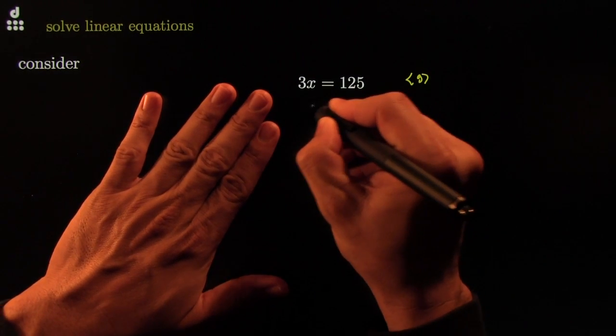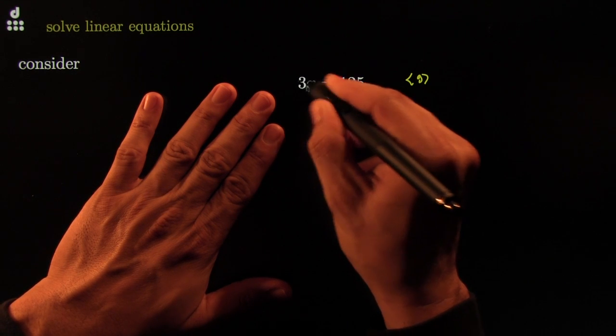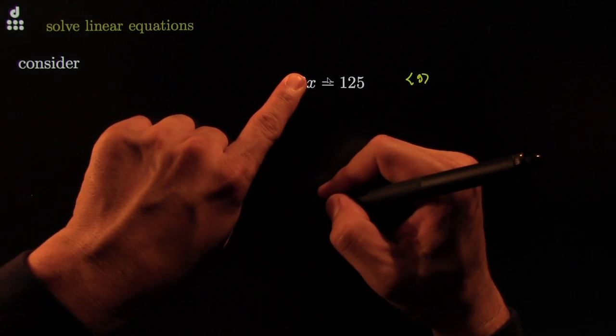So you could, for example, say, you know what, I don't like this 3 here. If we didn't have that 3, we'd be done solving it.